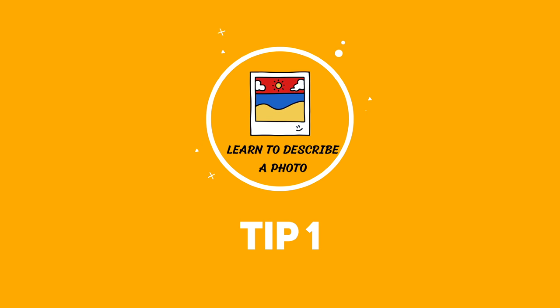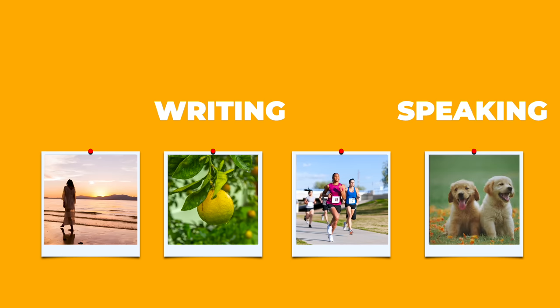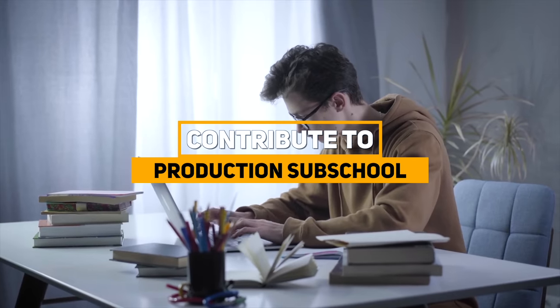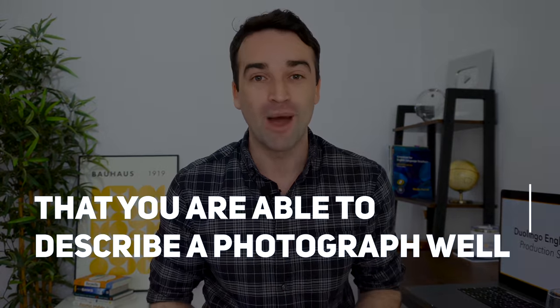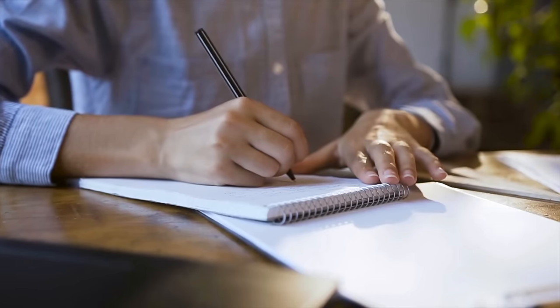Tip number one is to learn how to describe a photo. On the Duolingo English test you have to describe four photos in total — three through writing and one through speaking — and they each contribute to your production subscore. So if you want to get a good score in production, it's essential that you're able to describe a photograph well. But it's not easy; a lot of my students struggle with this question type greatly because in real life we don't often describe a photo in as much detail as Duolingo want us to.